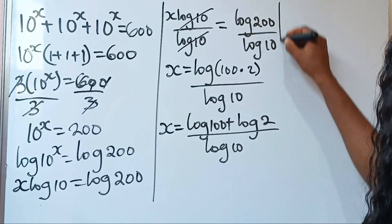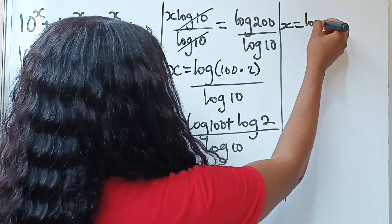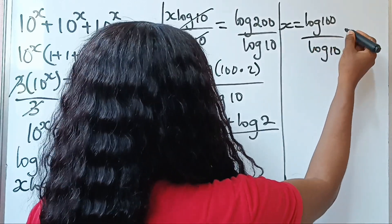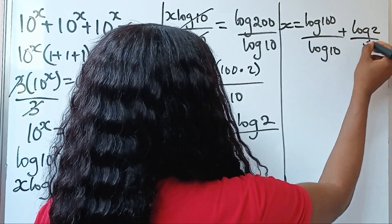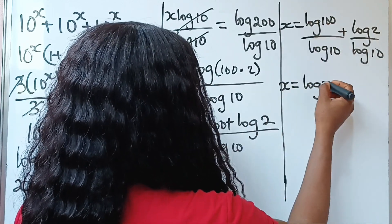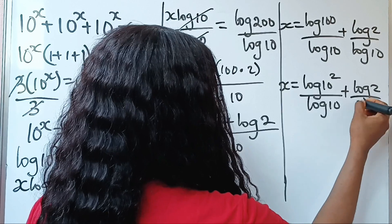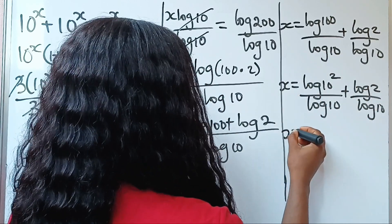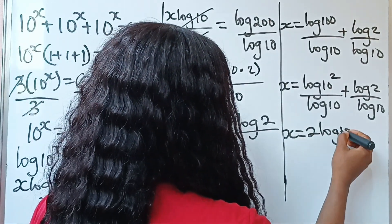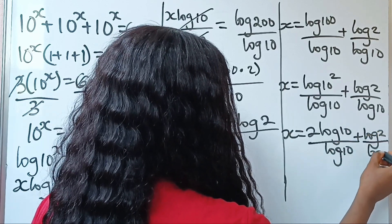Now, x can be written as log 100 divided by log 10 plus log 2 divided by log 10, distributing the denominator. Now, log 100 is the same thing as 10 to the power of 2, so we apply the log power rule: this becomes 2 log 10 divided by log 10, plus log 2 divided by log 10.